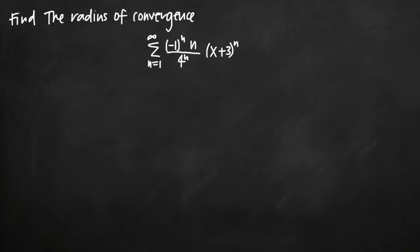Today we're going to be talking about how to find the radius of convergence of a series. In this particular problem we've been given the infinite sum from n equals 1 to infinity of negative 1 raised to the n power times n, divided by 4 raised to the n power, all multiplied by quantity x plus 3 raised to the n.